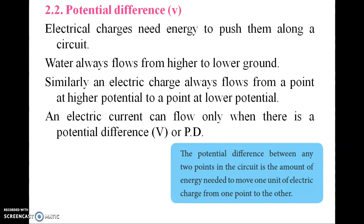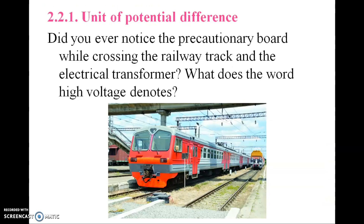Potential difference: electric charges need energy to push them along circuits. Just as water always flows from higher to lower ground, electric charge always flows from a point of high potential to a point of lower potential. An electric current can only flow when there is a potential difference, denoted V or PD.